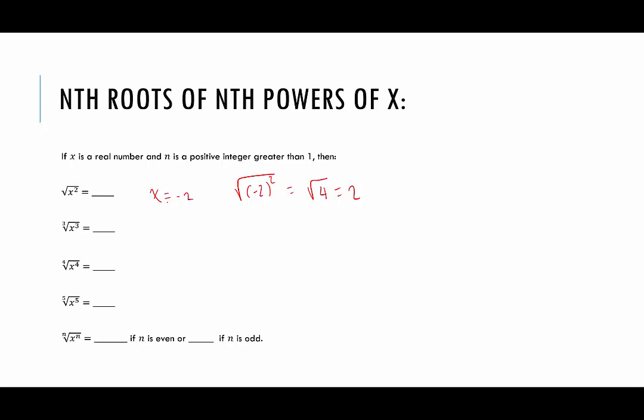What we do say is that it equals the absolute value of x. Because you square it, which is going to turn it positive. And then when you take the square root, that's finding the principal root, which is the positive or non-negative root.